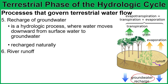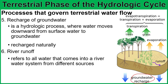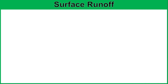This process is followed by river runoff. River runoff refers to all water that comes into a river water system from sources such as groundwater, rainfall, and snowmelt. Now let's talk about what happens when water begins running downhill — we call this surface runoff. Surface runoff is the flow of water over land surfaces.